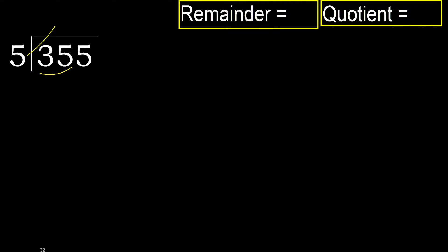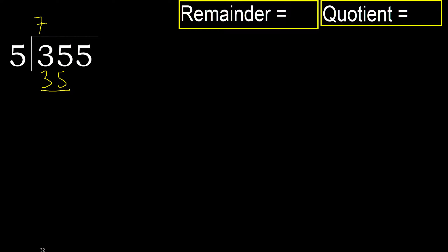5 multiplied by which number is nearest to 35 but not greater? 5 multiplied by 8 is greater, so multiplied by 7 — 35 is not greater. 35 minus 35 equals 0.